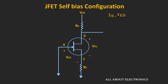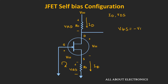For the N-channel JFET, the drain current ID flows from the drain terminal toward the source terminal, and the same drain current ID also flows through resistor RS. Let the voltage drop across RS be VRS and across RD be VRD. Applying KVL in this loop, the voltage VGS equals minus VRS, which equals minus ID times RS. This is the control voltage VGS that controls drain current ID for this configuration.